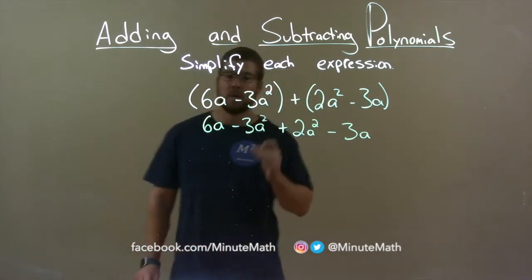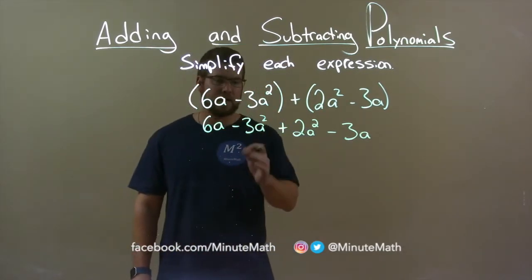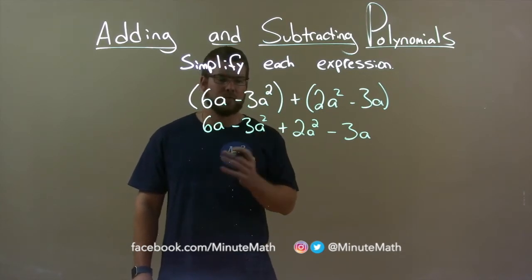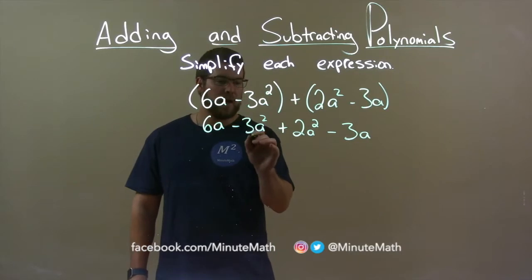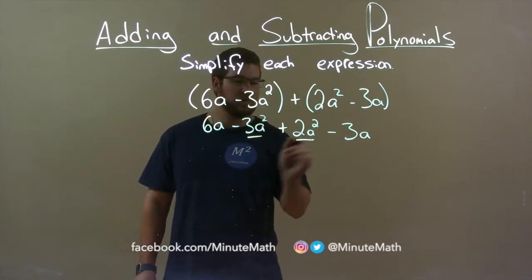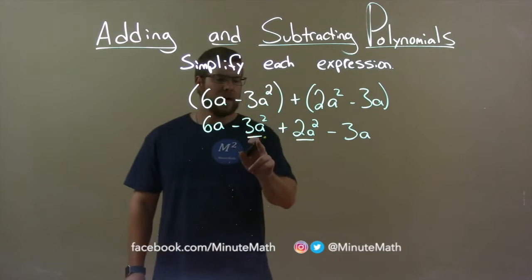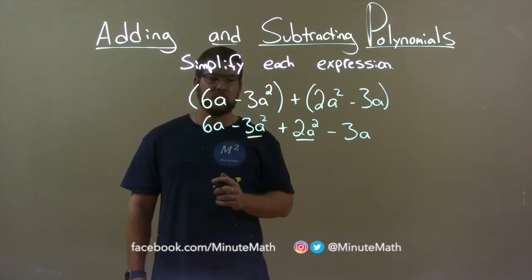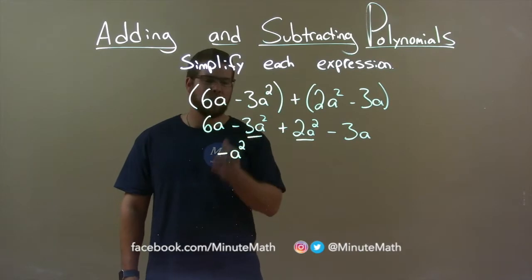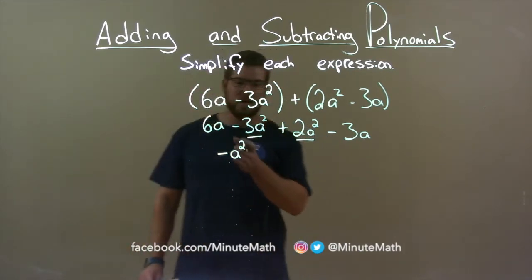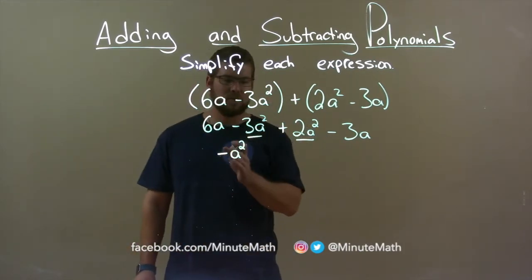So now we want to combine our like terms, like terms and highest degree first. So we have an a squared and I see that as my highest degree. Minus 3a squared and 2a squared, well that's a minus 3a squared, right? So minus 3a squared plus 2a squared is minus 1a squared. Remember we don't need to always write the 1 out in front. We just know it's going to be there. So it's just minus a squared.